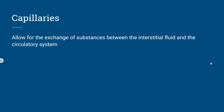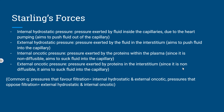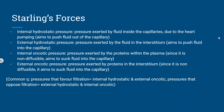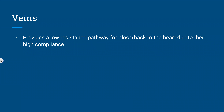Starling forces will come back in renal as well. Internal hydrostatic pressure is the pressure exerted by fluid inside the capillaries, pushing fluid out. External hydrostatic pressure is exerted by interstitial fluid, pushing fluid in. Internal oncotic pressure from plasma proteins draws fluid into the capillaries. Pressures that favor filtration are internal hydrostatic and external oncotic; pressures that oppose filtration are external hydrostatic and internal oncotic. Veins provide a low-resistance pathway for blood back to the heart due to their high compliance.